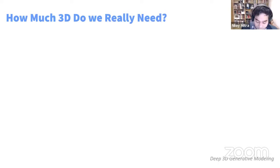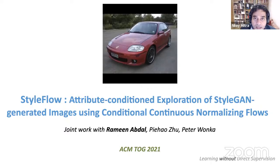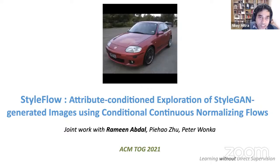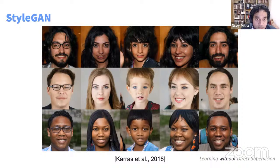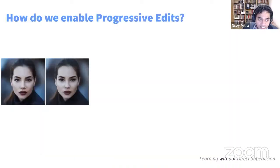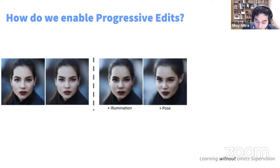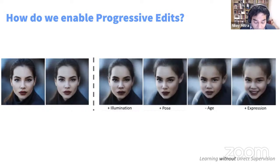Finally, do we really need 3D data at all, or can we work in an abstract domain? This is inspired by StyleGAN, which generates amazing images. What we enable in this work — StyleFlow — is that you can do many 3D edits by working directly in the latent space: illumination, pose, expression, and more.